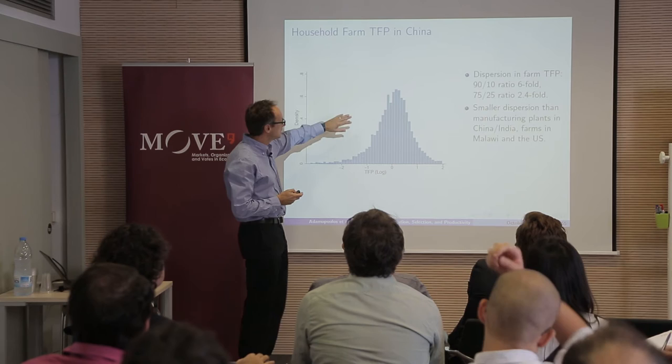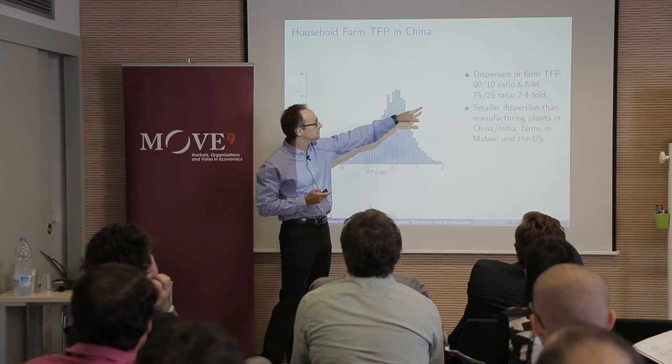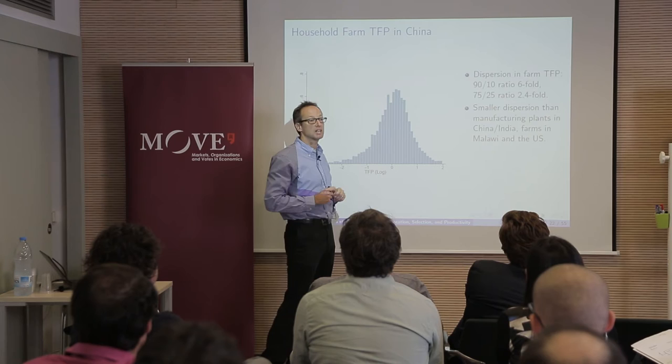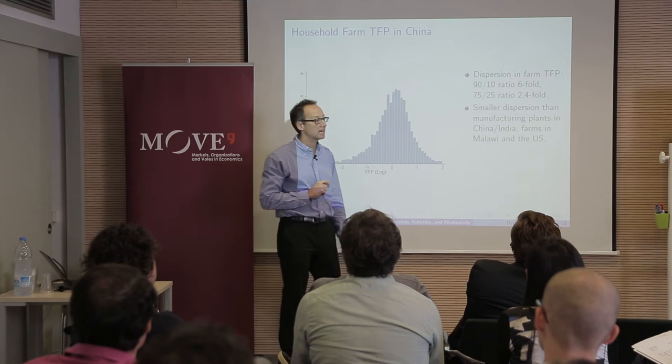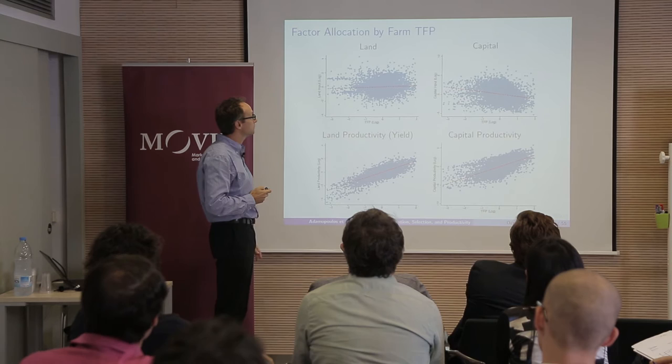This is the distribution of productivity in China. The log-normal 90-to-10 ratio is six-fold and the 75-to-25 percentile ratio is 2.4-fold. This dispersion is relatively small compared to other contexts — for Hsieh and Klenow's manufacturing plants in China or India, the 90-to-10 ratio would be something like 13 or 14. So there's nothing crazy in terms of the dispersion of productivity we're getting.